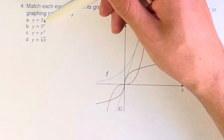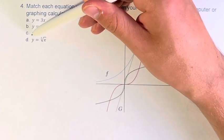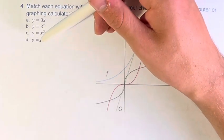So we have y equals 3x, y equals 3 to the x, y equals x cubed, and y equals the cube root of x.